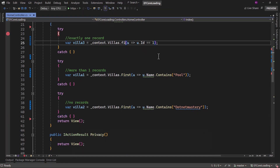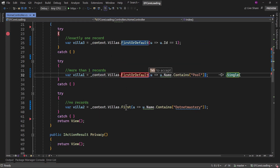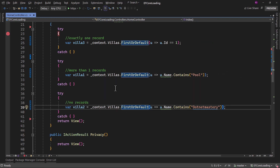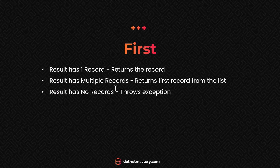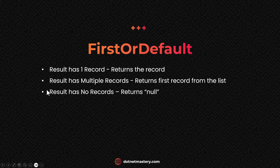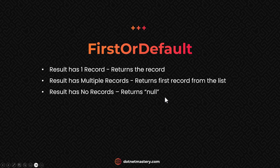Now, can you identify the difference between First and FirstOrDefault? It is exactly the same as the difference between Single and SingleOrDefault. FirstOrDefault will not throw an exception if there are no records. When you add 'OrDefault,' that essentially means you handle the empty scenario — if there are no records, return null and not throw an exception. Everything else stays the same.